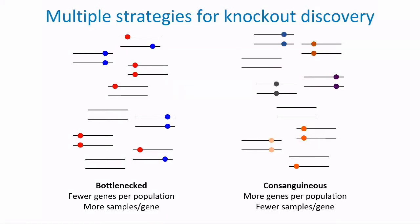An alternative strategy is to look at consanguineous populations, which hasn't come up much at this conference. Consanguineous populations — where there is a high level of parental relatedness — are important for knockout discovery because they increase the probability that a rare variant heterozygous in both parents, identical by descent, is homozygous in the child. This very substantially increases the probability that rare loss-of-function variants will be found in a homozygous state, and we've shown this is an extremely efficient way of enriching for rare homozygous knockouts.